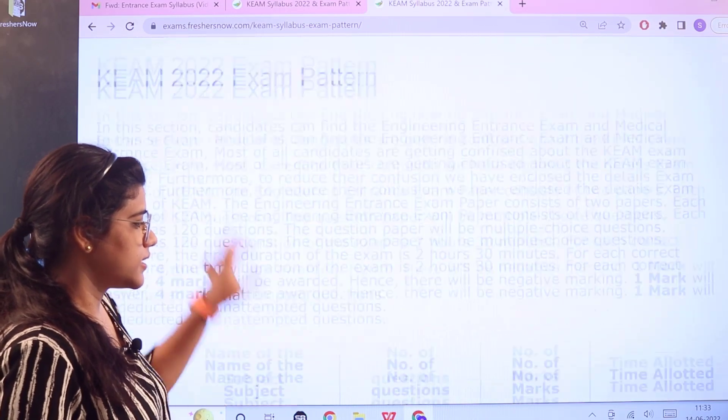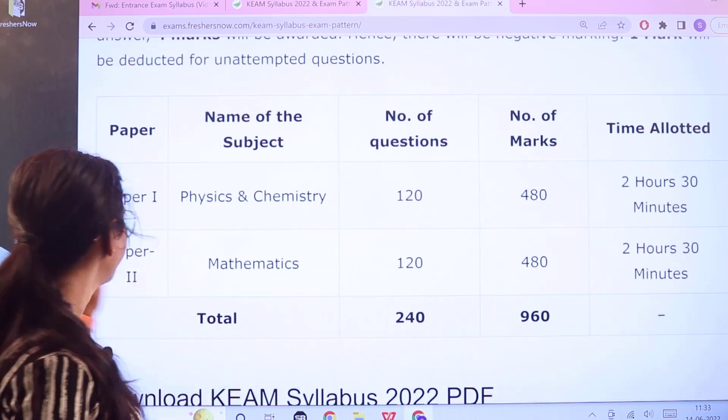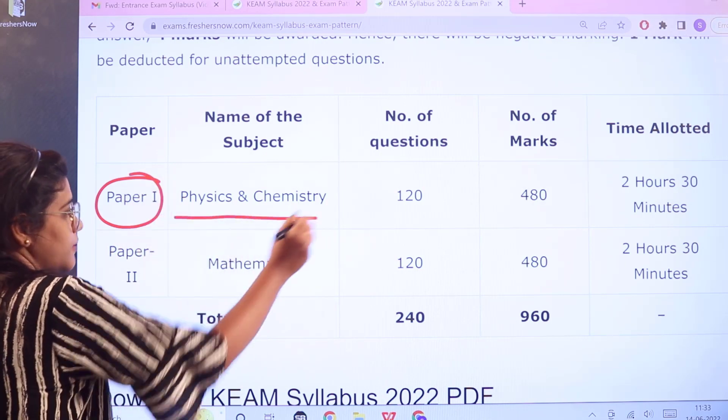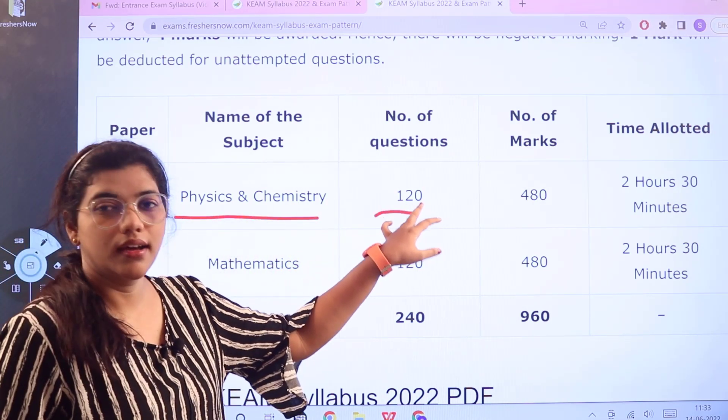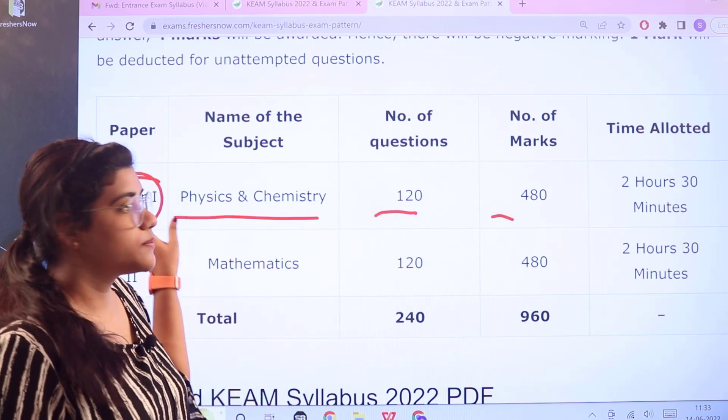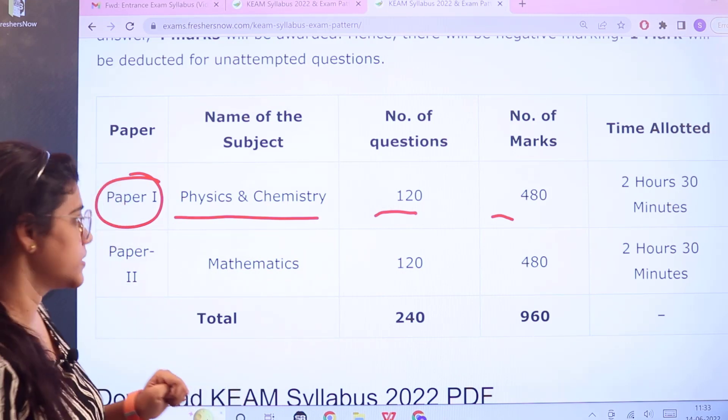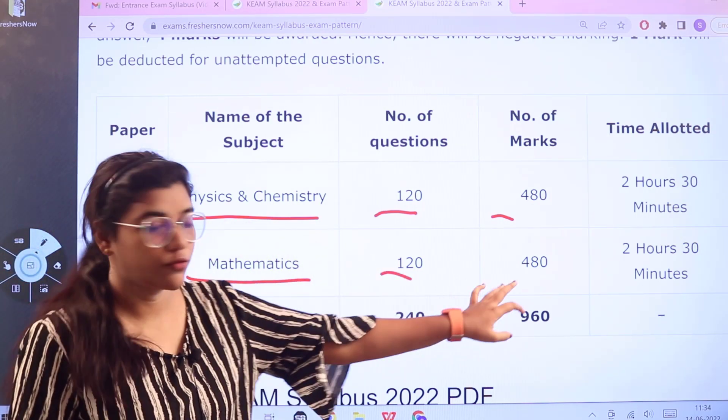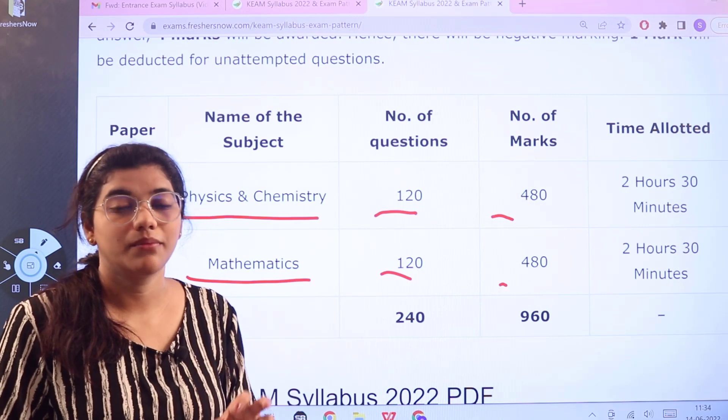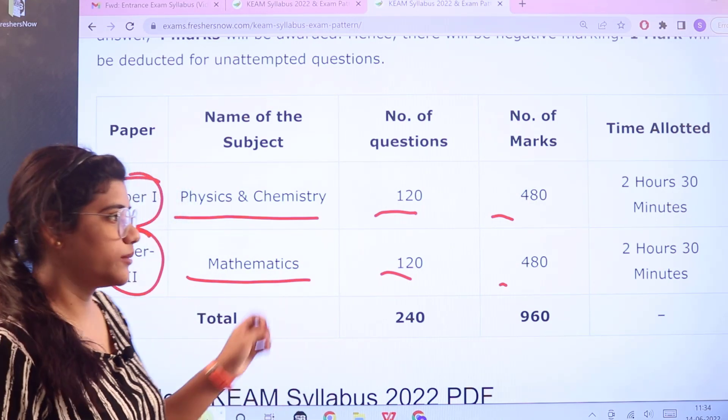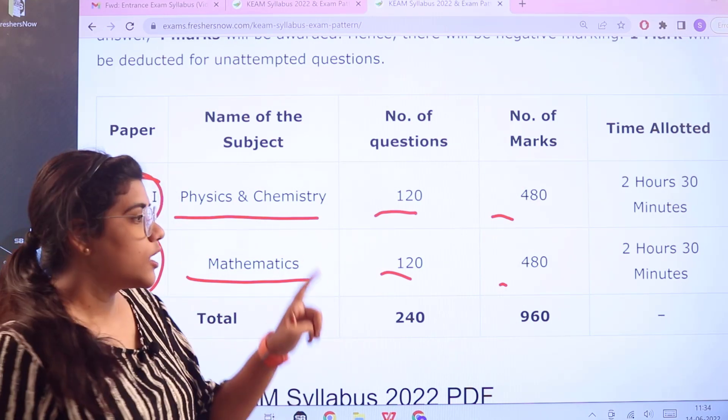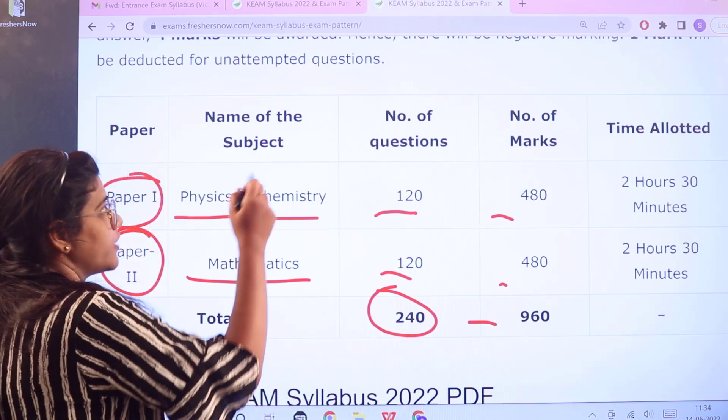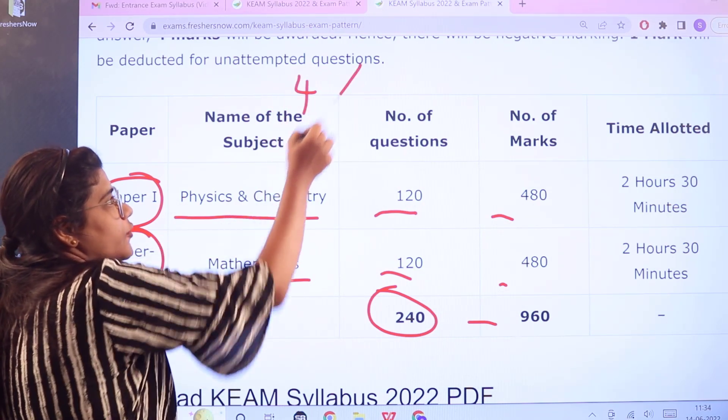Here is the marking scheme. As you can see, you have the examination divided into two papers. Paper one has physics and chemistry consisting of 120 questions carrying 480 marks. Then this paper one is conducted for 2 hours 30 minutes. For paper two, you have mathematics as a subject. Here again you have 120 questions carrying 480 marks. Again for this paper two, the total examination time is 2 hours 30 minutes. So two and a half hours is given for each of the papers, constituting 240 questions for 960 marks. So as you can understand, for every correct answer you would be given 4 marks, for every wrong answer one mark would be deducted, so there is negative marking in this.